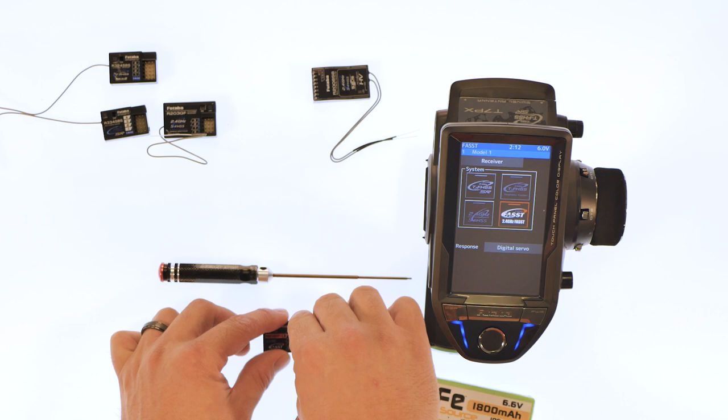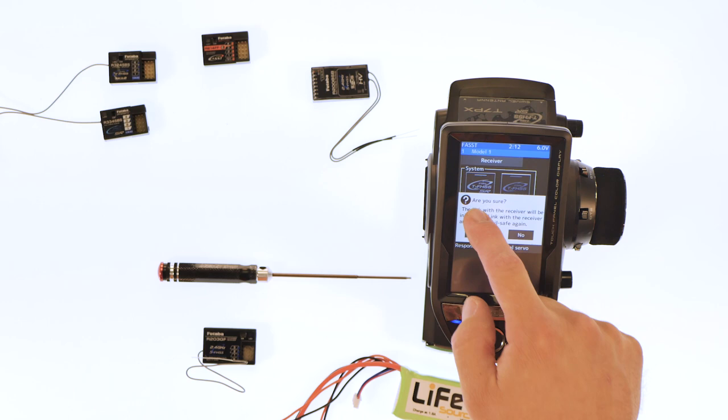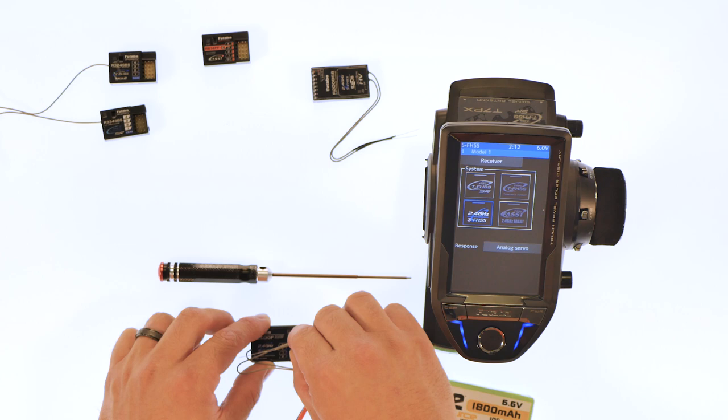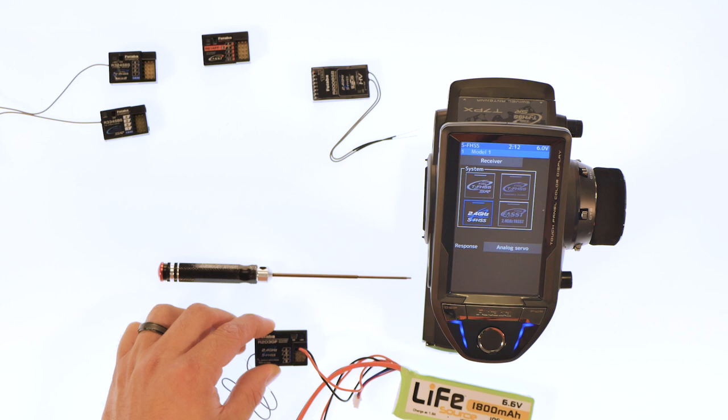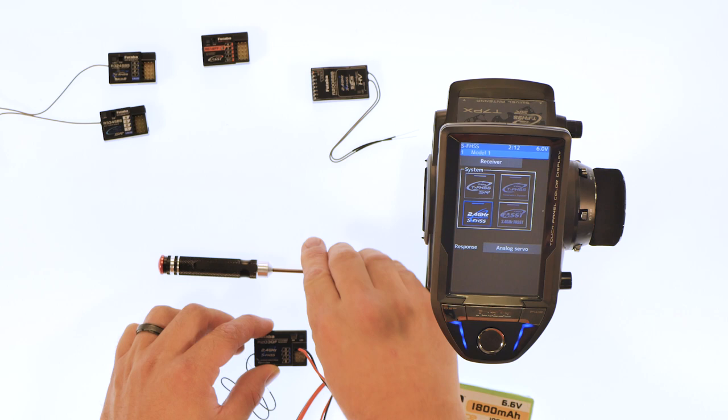So if you have a SFHSS receiver which here we're going to show the R203 GF. We'll show you how to link that real quick. You want to hit the correct icon which is the SFHSS icon. We'll go ahead and plug it in. This one here won't be flashed or anything. What you'll do is you hit the button. Now once the light turns green you're linked and ready to go. So that's how you do the SFHSS receivers.